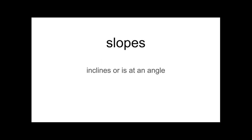The next vocabulary word is slopes. Please say slopes with me. That means inclines or is at an angle. For example, a hill that slopes downward is good for sledding.